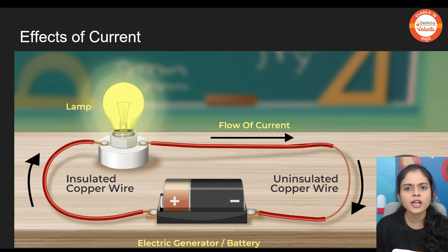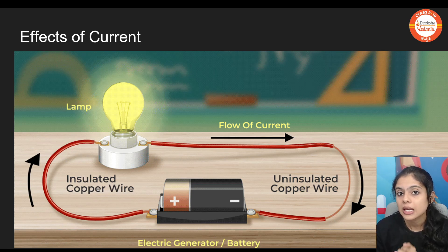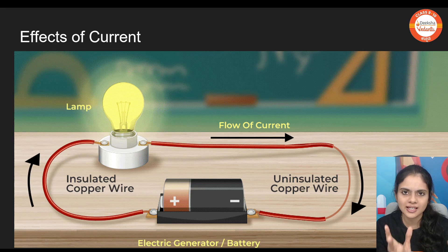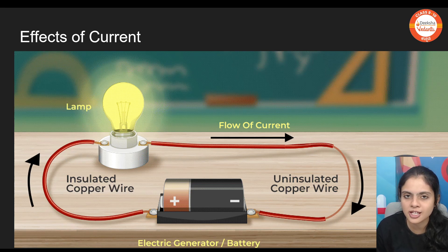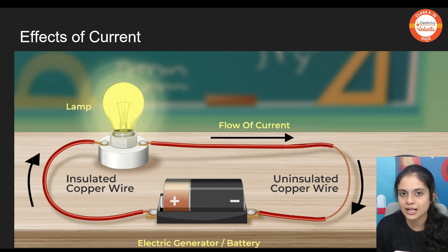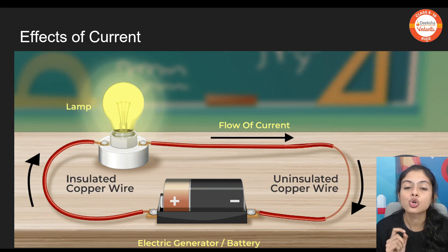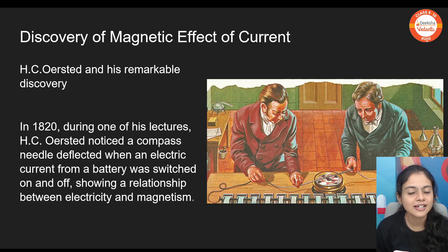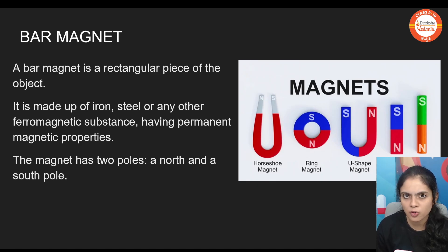Oersted was just preparing things to demonstrate an experiment for his students. In this time, he accidentally discovered the magnetic field. He was connecting the circuit when, beside it, there was a compass, and he saw deflection in the compass when he switched it on. When he switched it off, there was no deflection, but when he switched it on there was deflection. So he got to know that there is some relation between electricity and magnetism. This was first discovered by H.C. Oersted.